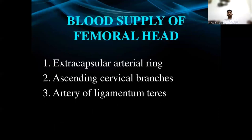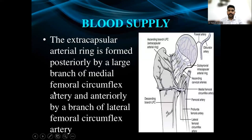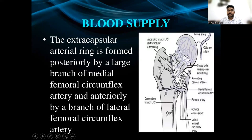Now, the blood supply of the femoral head. There are three major sources of blood supply to the femoral head: the extracapsular arterial ring, ascending cervical branches, and the artery of ligamentum teres. This is the extracapsular arterial ring, these are the ascending cervical branches, and this is the foveolar artery or artery of ligamentum teres.